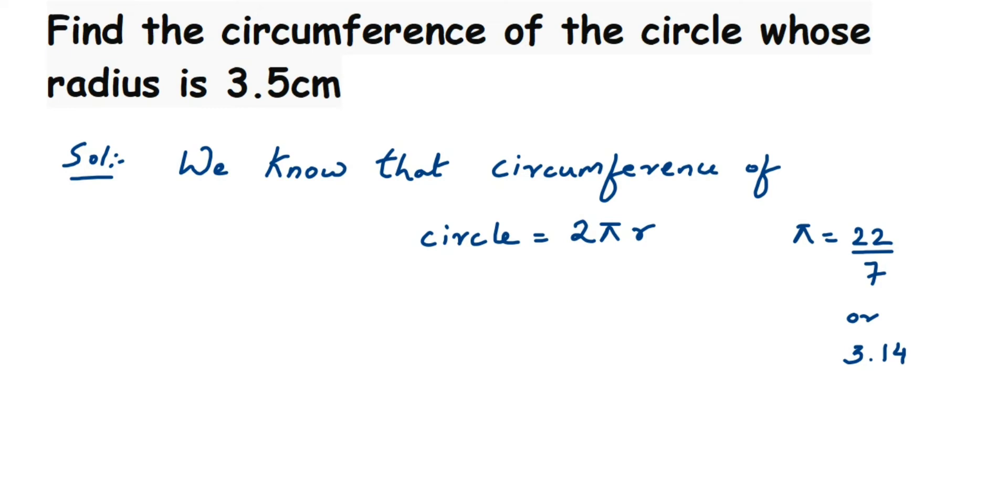Given radius r is 3.5 centimeters. So circumference C equals 2πr. Substituting the values: C = 2 × 22/7 × 3.5. I'm not adding centimeters here yet; now we have to cancel the numbers.